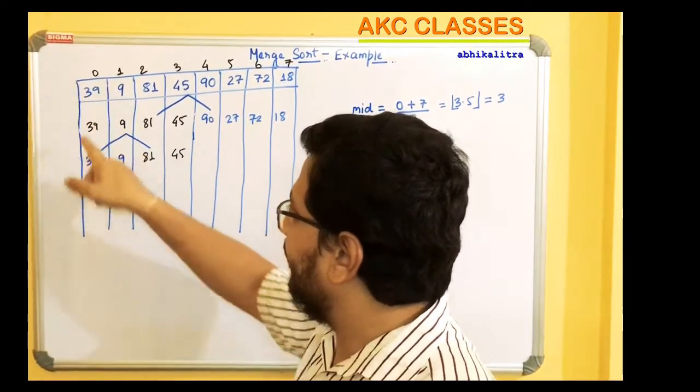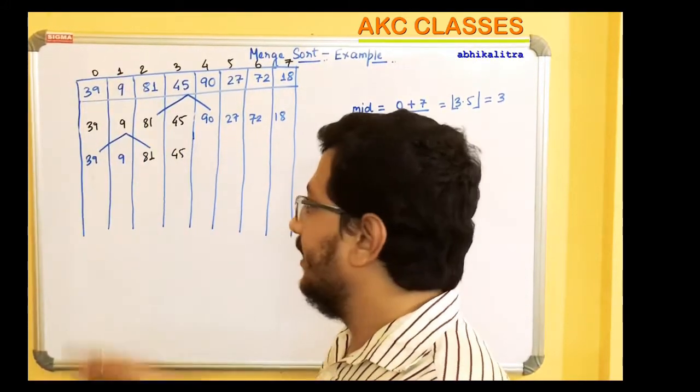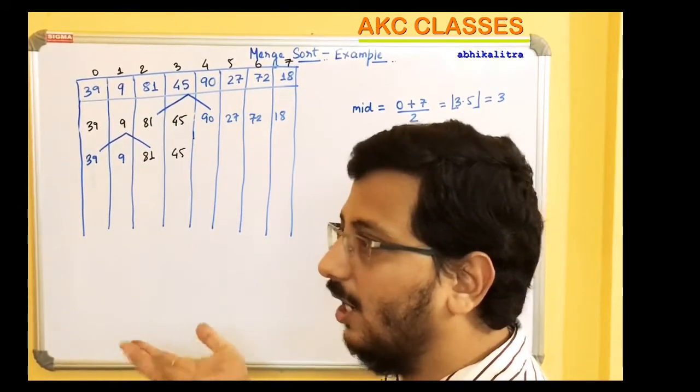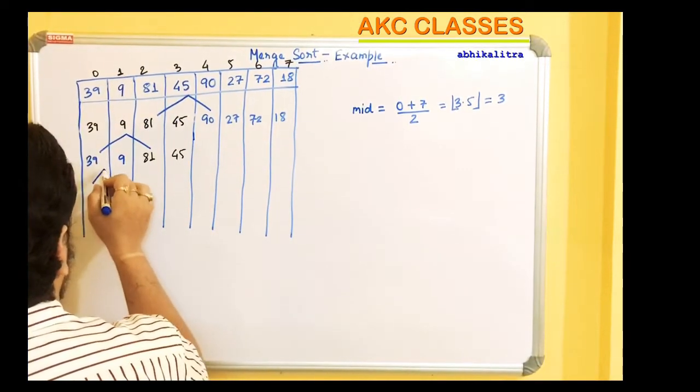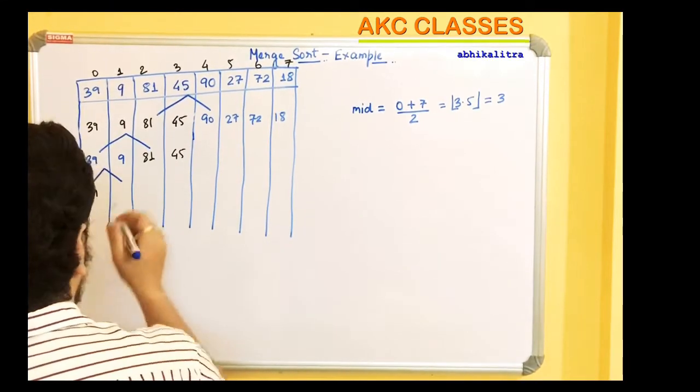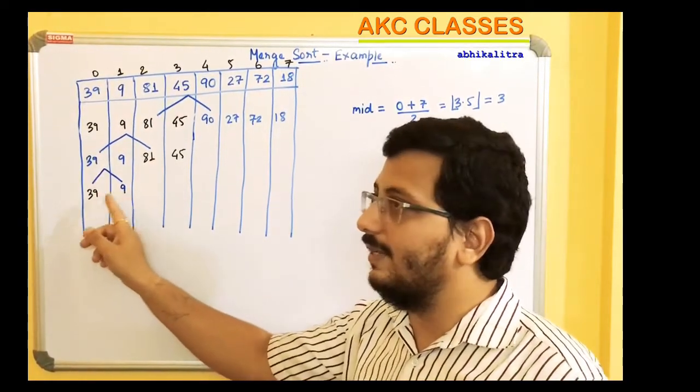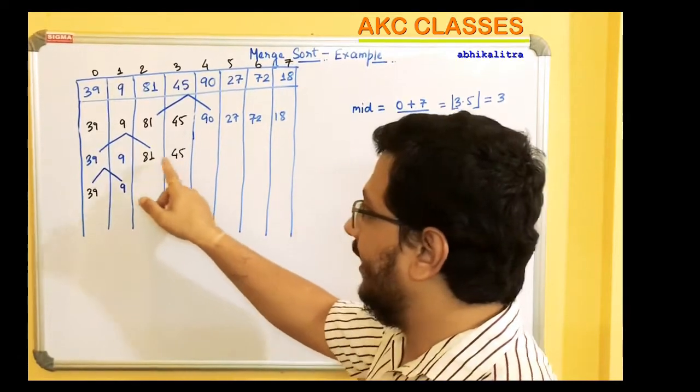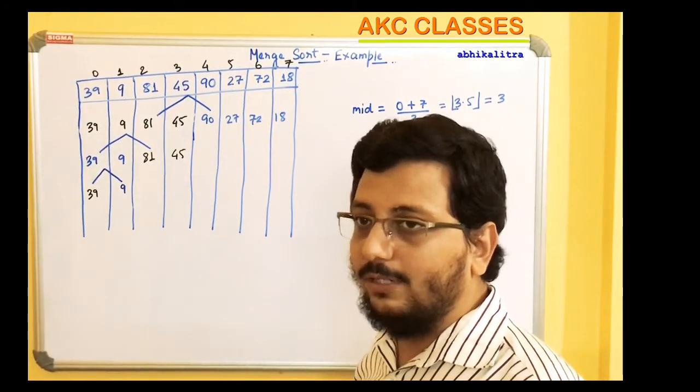Now it's 0 and 1, starting from 0th index and ending with 1st index. 0 plus 1 whole divided by 2 is 0.5, so 0 index. It ends with 39 and 9. When we have only one element left, we will stop there. Even in this part, the right sub has two elements which starts from 2 and ends at 3.